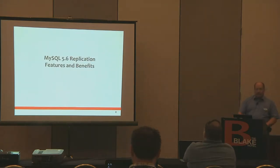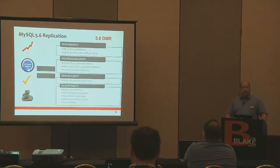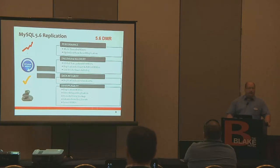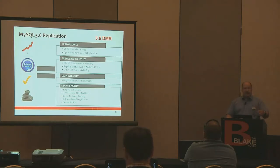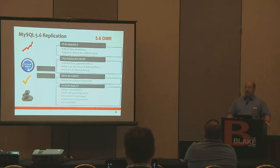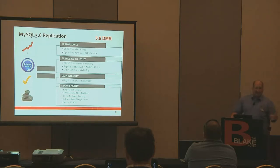Let's talk about 5.6 replication features and benefits. In the DMR, for performance, we have multithreaded slaves. Traditionally, MySQL replication — the slave itself — executes one entry in the binary log from the master at a time. If you've got a master throwing tens of thousands of log entries and the slave is reading those, it's still executing them one at a time. With multithreaded slaves, we can divide and conquer. Right now it uses a fairly simple division by database, so it creates a thread per database. That won't help if you only have one database replicating a massive amount of data, but if you're replicating lots of databases, you'll see a dramatic improvement.